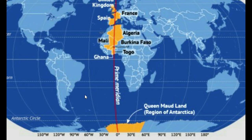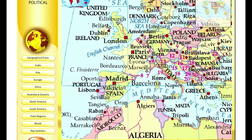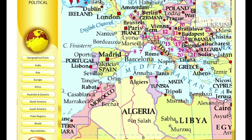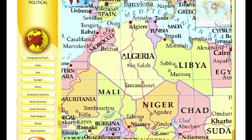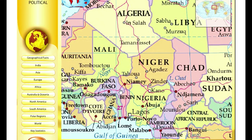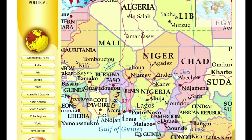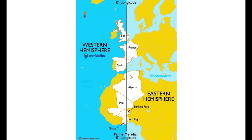Focus on the small country Togo — as you can see here, there are five countries from Africa: Algeria, Mali, Burkina Faso, Togo, and Ghana. And three countries from Europe: UK, France, and Spain. So there are eight countries total. I hope this is clear for you. Thank you very much.